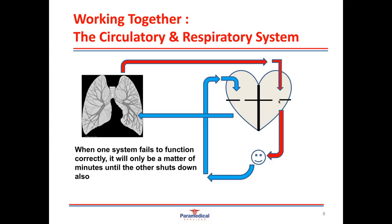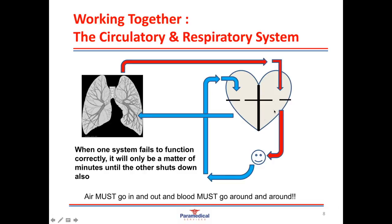If a patient stops breathing, it will only take a minute or two until their heart stops working properly. Simply remember: air must go in and out, and blood must go round and round to keep the system working. When doing CPR, chest compressions help pump the heart and move blood around the body, while ventilations get oxygen into the bloodstream. We artificially take over the normal functioning of the respiratory and cardiovascular systems during CPR.